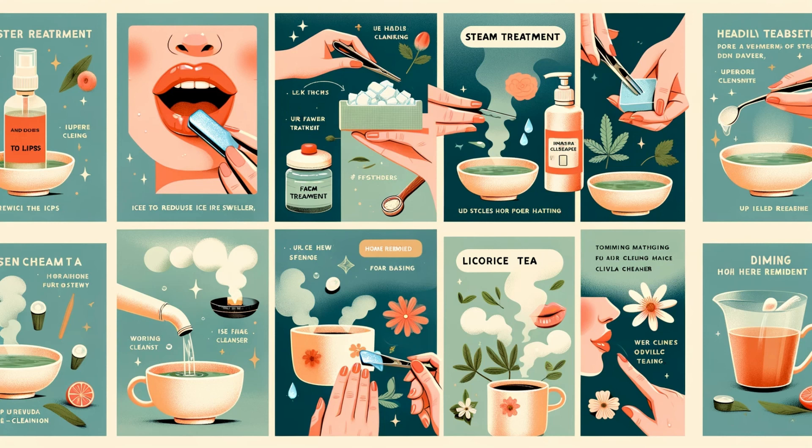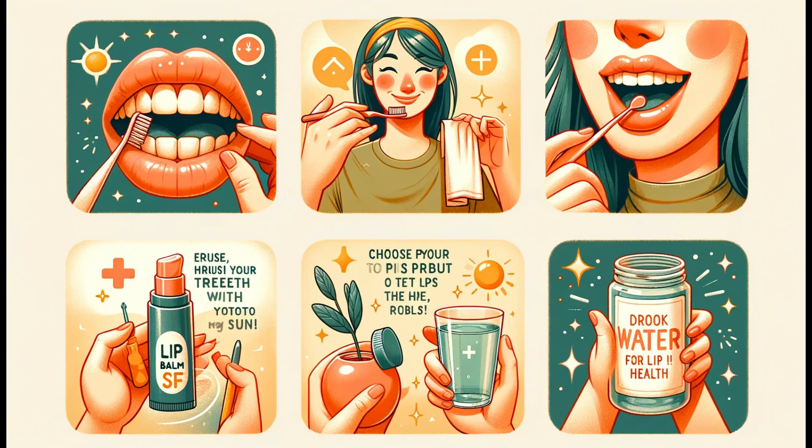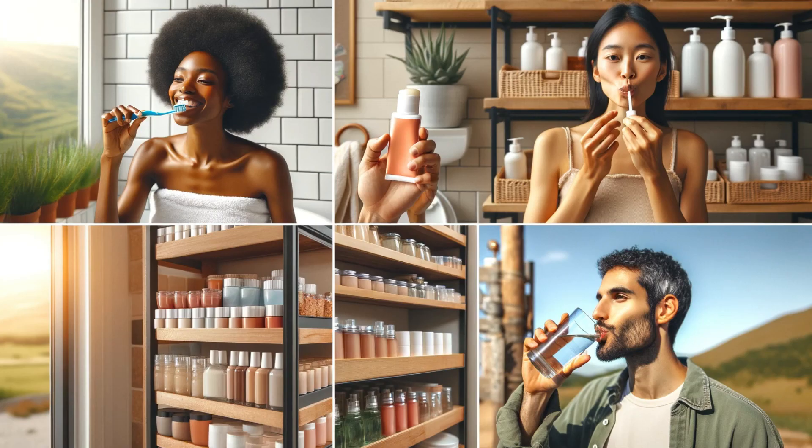Acne around the lips can be treated with acne medication and antibacterial creams. For oral herpes, antiviral drugs are commonly used, while benzoyl peroxide and salicylic acid are options for acne. For home remedies, ice can reduce pain from fever blisters, and steam helps with inflammation and swelling from pimples. Gentle brushing and facial cleansers can keep the lip area clean.